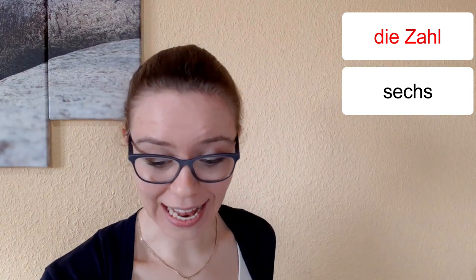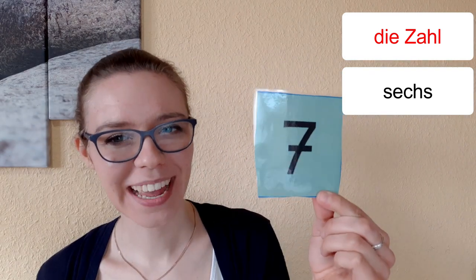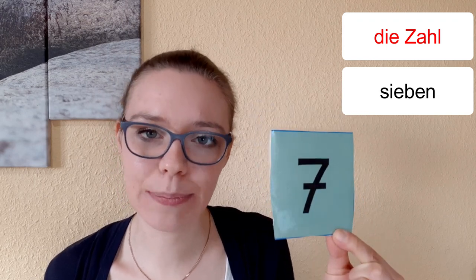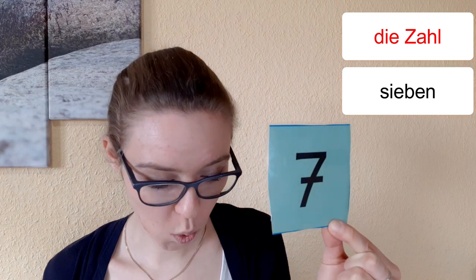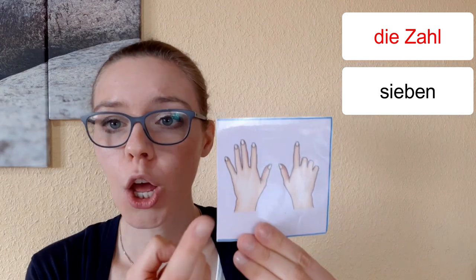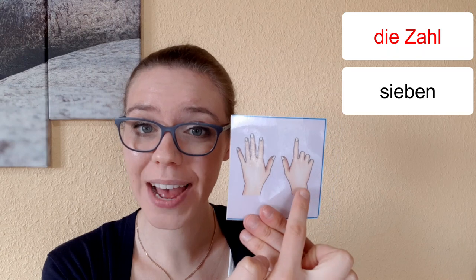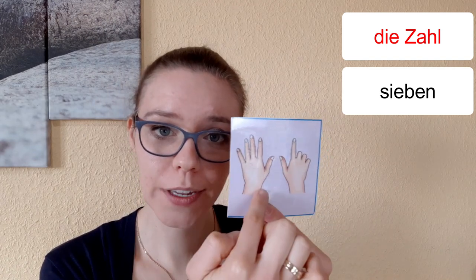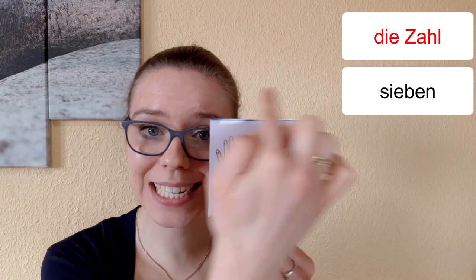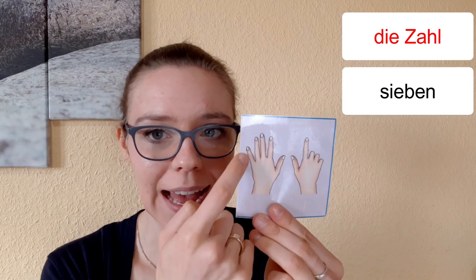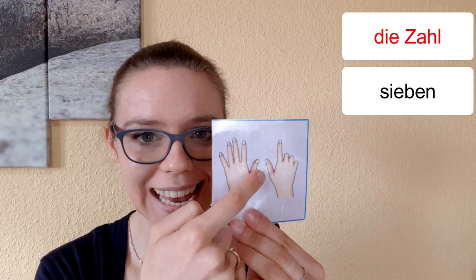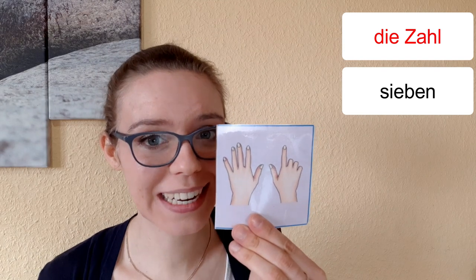Die nächste Zahl ist das hier. Wie heißt diese Zahl? Das ist die Sieben. Sieben. Und sieben Finger. Das ist fünf plus zwei. Fünf Finger und zwei Finger. Fünf Finger, zwei Finger, sieben Finger. Sieben. Eins, zwei, drei, vier, fünf, sechs, sieben. Sieben Finger.